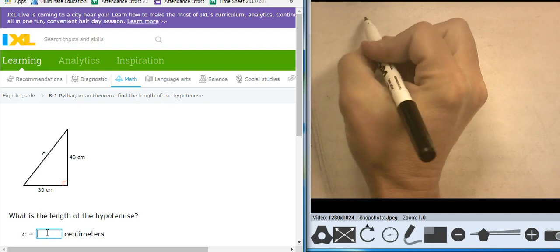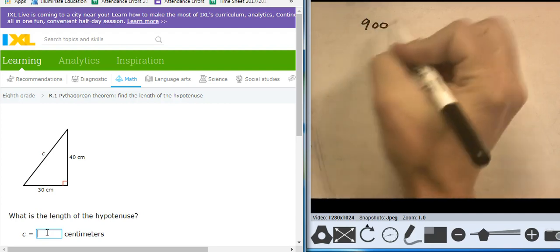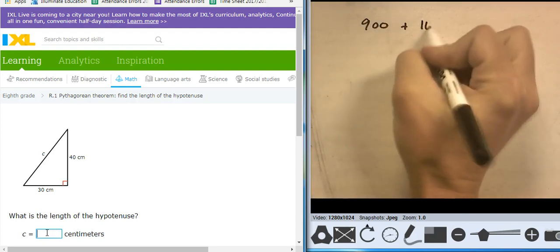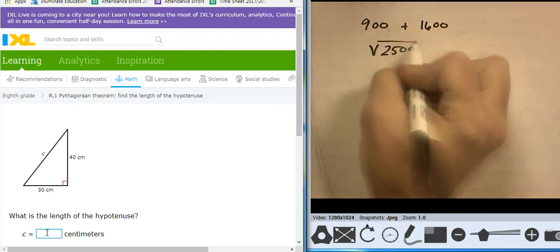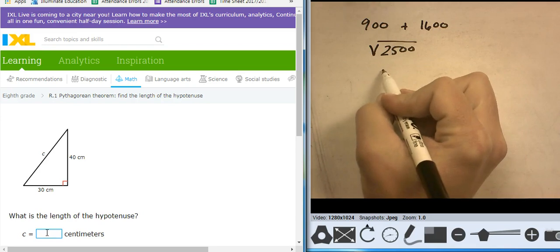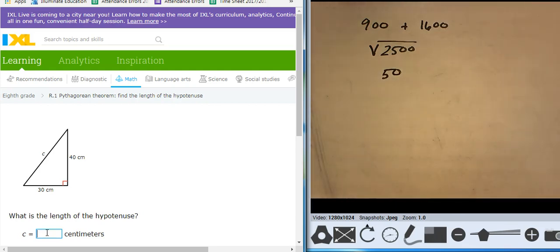Let's see. 30 squared is 900. 40 squared is 1600. Add those together, I get 2500. Take the square root of that. I get 2. I get not 25. I get 50, I think. I'm going to check that, though. It sure feels like 50. 50.